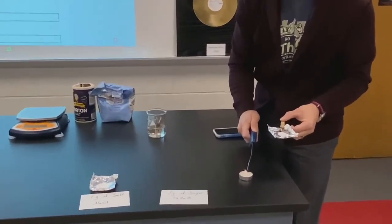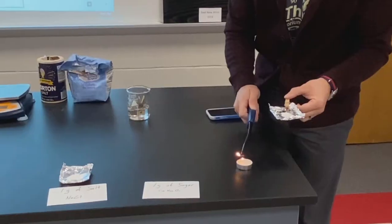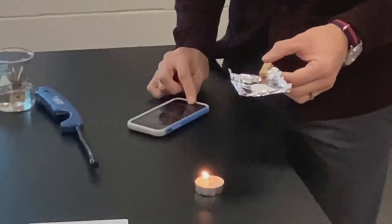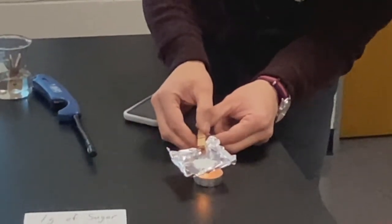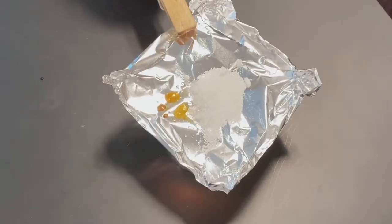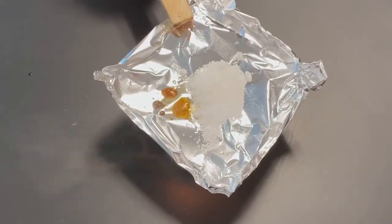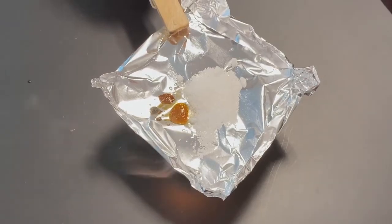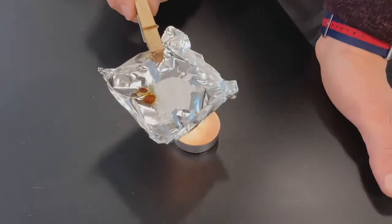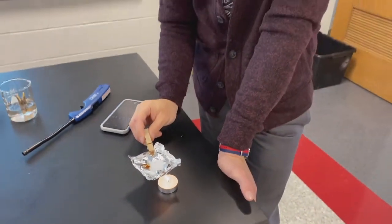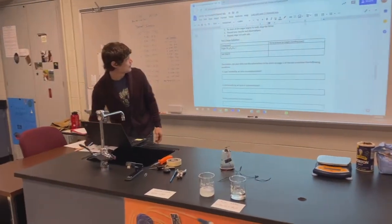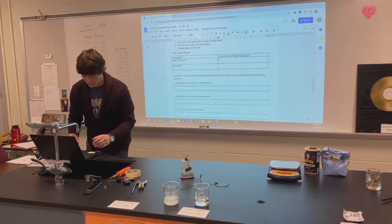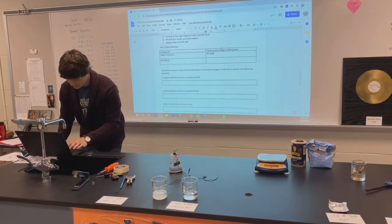This one is sugar. Light my tea candle. I'm going to start my timer as I lower it down onto the flame. As you can see, my sugar is starting to melt at about 45 seconds — it began to melt. I'm not going to keep melting it because it's going to start to burn and smoke and I don't want to set off the fire alarms. So we're going to stop at 45 seconds because that's when it just started to melt. Under sugar: 45 seconds.